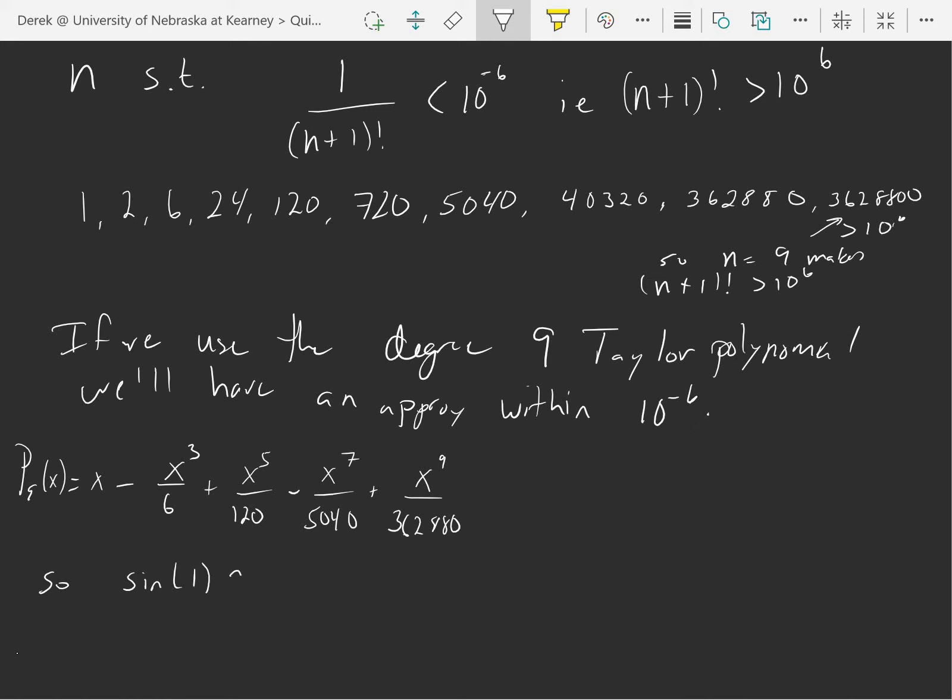If we put 1 in there, sine of 1 is going to be approximately 1 minus 1 sixth plus 1 over 120 minus 1 over 5040 plus 1 over 362,880, which will be a good approximation to within 10 to the 6th, or to 1.